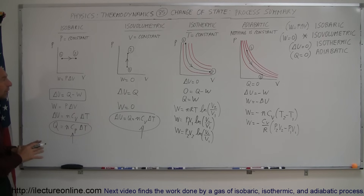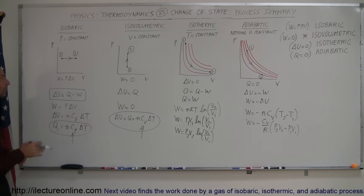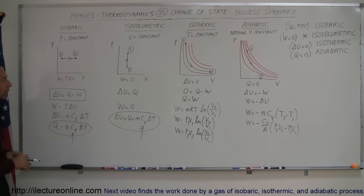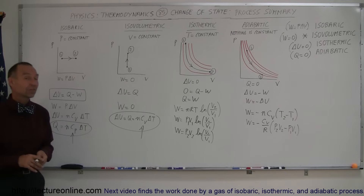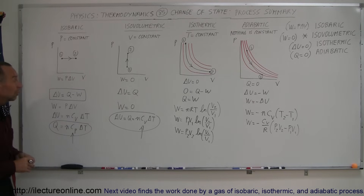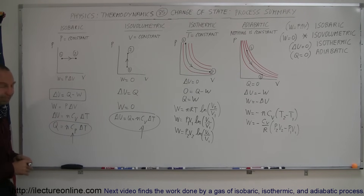Here's a quick overview you can refer to when you need to find W, ΔU, and Q — W being work — in a thermodynamic process. These are the four main processes you need to know when studying thermodynamics. Thank you.